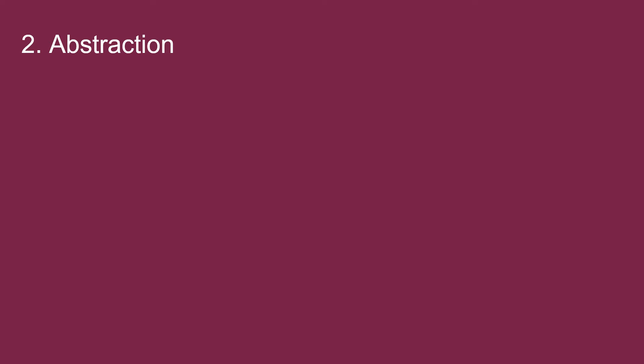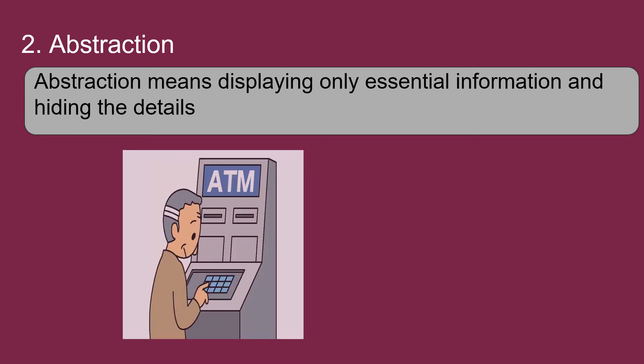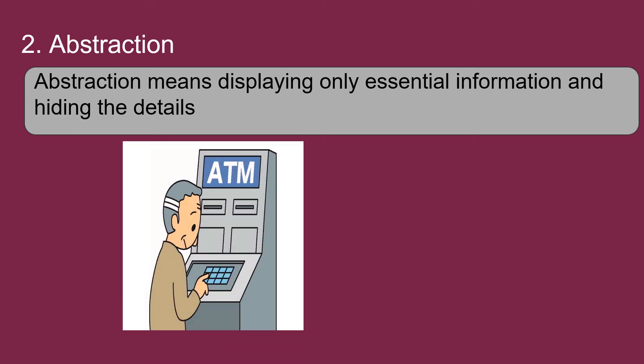Next feature is abstraction. Abstraction refers to providing only essential information about data to the outside world, hiding the background details or implementation. For example, ATM machine. We all perform operations on the ATM machine like cash withdrawal, money transfer, retrieve mini statement, etc. But we might not know internal details about ATM.